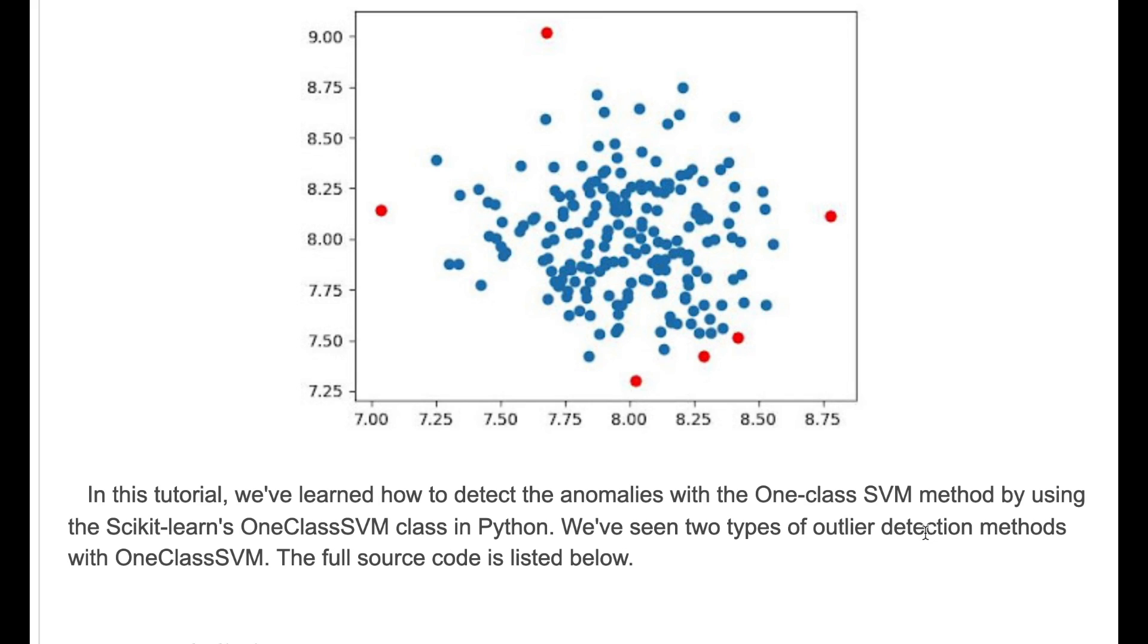In this tutorial we've learned how to detect the anomalies with the One-Class SVM method by using scikit-learn's OneClassSVM class in Python. And we've seen two types of outlier detection methods.